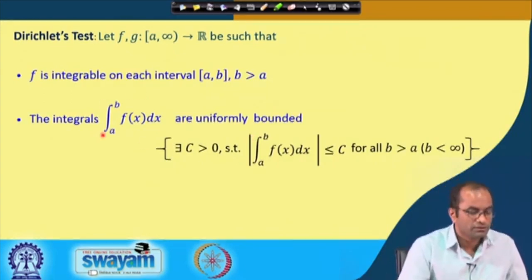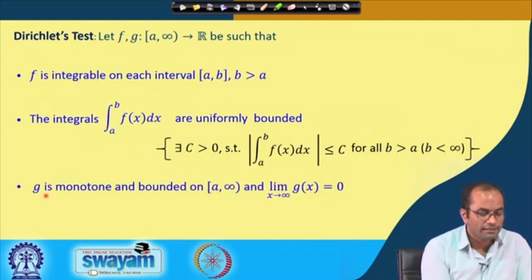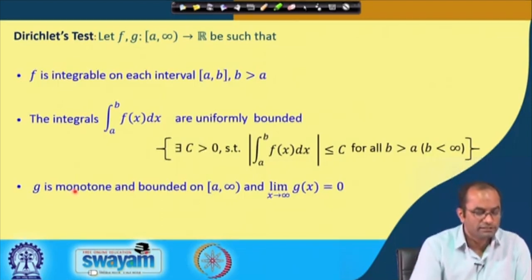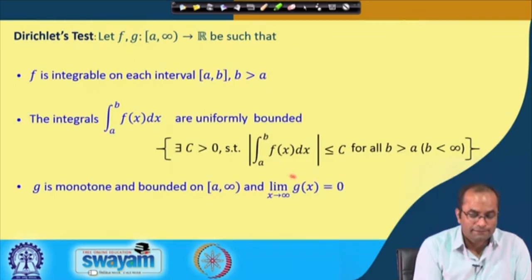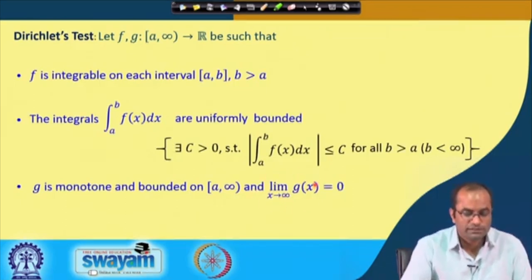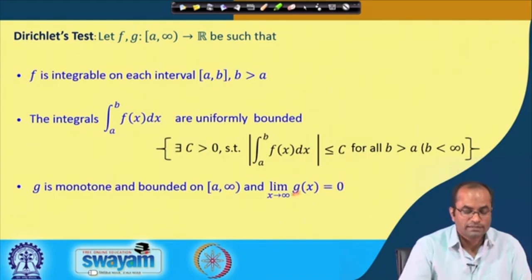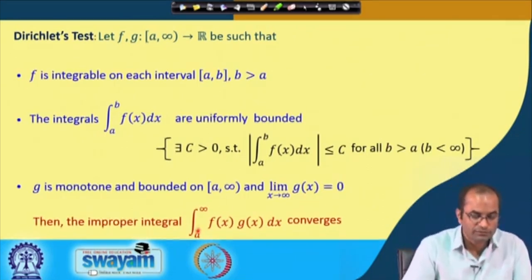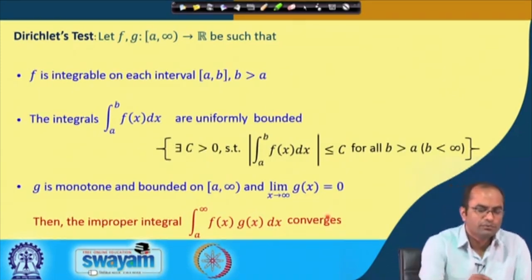These are the two conditions on f: f is integrable and the integrals are uniformly bounded. The function g is monotone and bounded — either monotonically increasing or decreasing — and the limit of g(x) as x approaches infinity is 0. Under these conditions, the improper integral from a to infinity of f(x)g(x) dx converges. We will not go through the proof of this result.